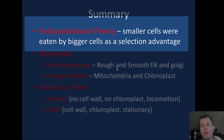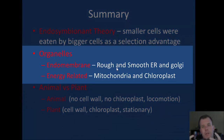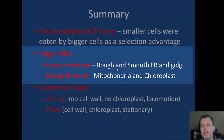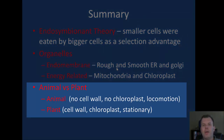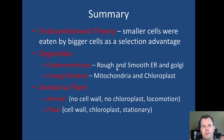To summarize: the endosymbiont theory is the idea that prokaryotes came together in symbiosis to form eukaryotic cells, to survive the new oxygen-rich environment. The organelles of eukaryotes include membrane-bound ones — the ER, which makes proteins and lipids, and the Golgi apparatus, which packages and ships materials. Energy-related organelles include mitochondria in all cells, and chloroplasts only in plant cells for photosynthesis. The key difference between animals and plants: animal cells have no cell wall and no chloroplasts and can move; plant cells have cell walls and chloroplasts and don't move. Thanks for watching — I'll see you next time.